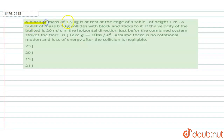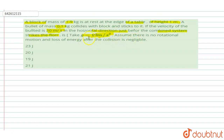In this question, a block of mass 1.9 kg is placed at the edge of a table of height 1 meter. A bullet of mass 0.1 kg collides with the block and sticks to it. The velocity of the bullet is 20 meters per second in the horizontal direction. Given g = 10 m/s², assume no rotational motion and negligible energy loss after collision.